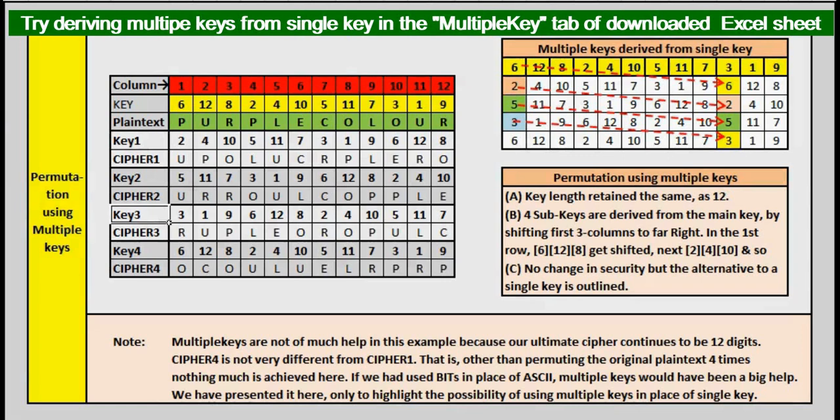We now replace the four keys in key one, key two and so on and get our final ciphertext. Do you wonder what improvement these multiple keys have brought in? We get the same characters but jumbled differently, which we have anyway achieved even with a single key.